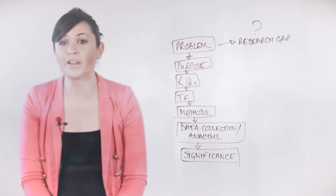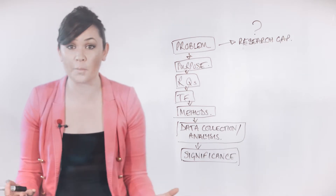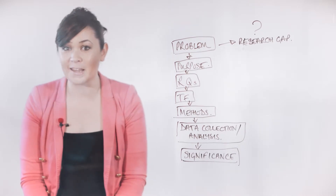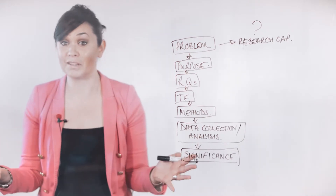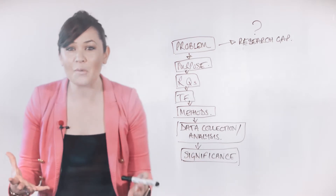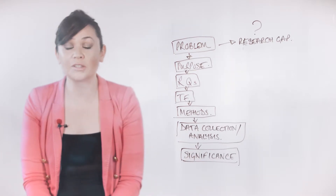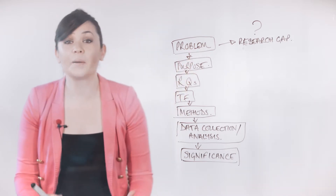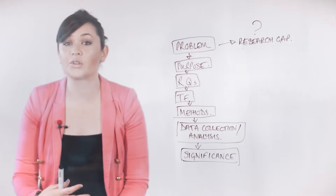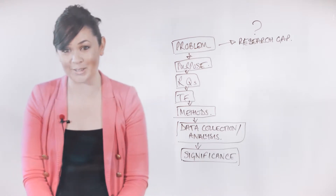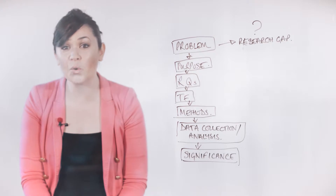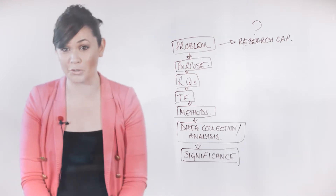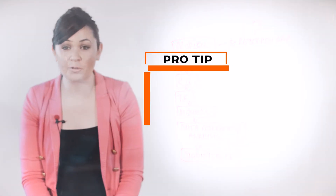Following on from this problem and research gap is the purpose of the study, or the purpose statement. The purpose is a very concise statement that basically says: this is what I'm trying to do here in this study, and here's how I'm going to do it. In order to achieve alignment, the purpose must match what has been stated in the problem statement. This is accomplished through the use of the same language to describe your variables or phenomena of interest. The purpose statement must also specify the method and design, and must use language that fits this approach.